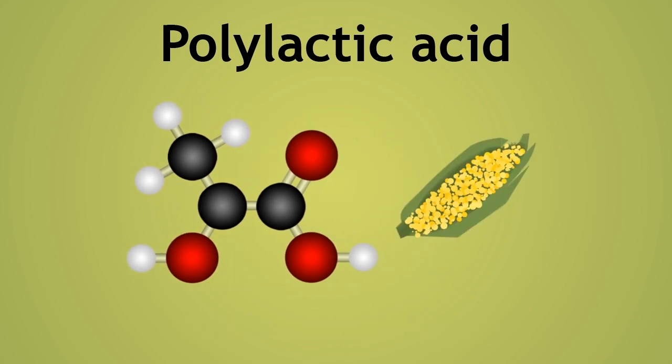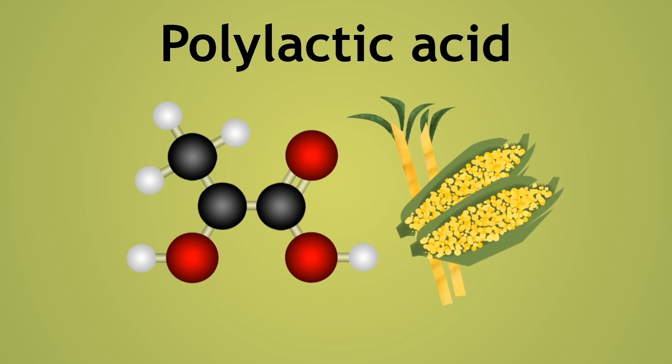These sugars can come from corn or sugarcane, all of which are renewable resources because they can be grown again and again.